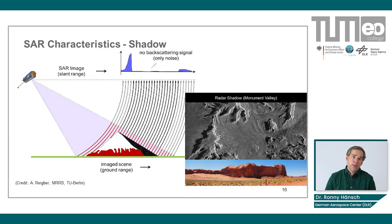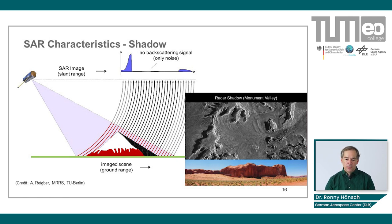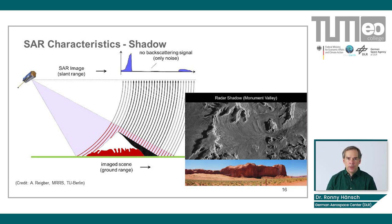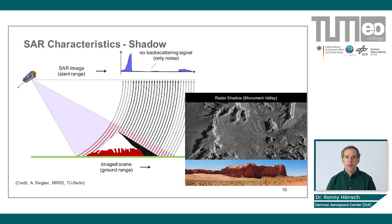The last effect I want to mention is shadow — something we also know from optical images. But for optical images, shadow depends on the position of the illumination source, like the sun. For SAR images, it only depends on the sensor position; the shadow is always on the opposite side of the object from the SAR sensor. This means SAR images have an inherent orientation: an expert can look at a SAR image with elevated objects and directly tell you where the sensor was flying and which direction it was looking.